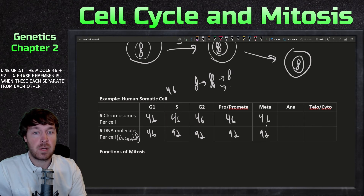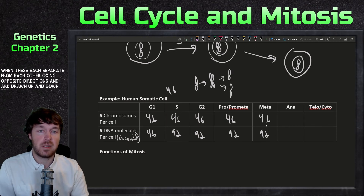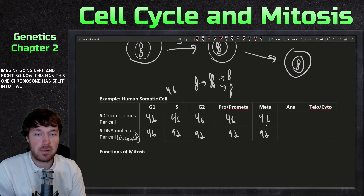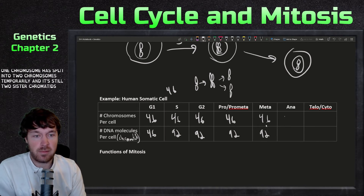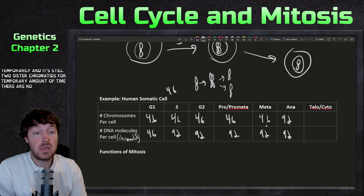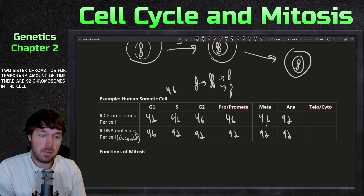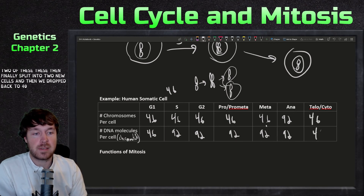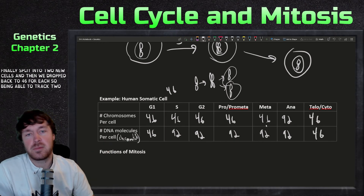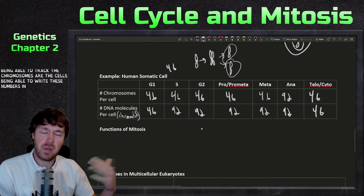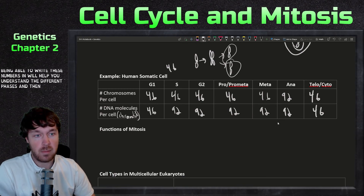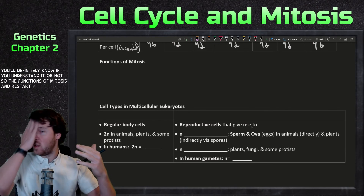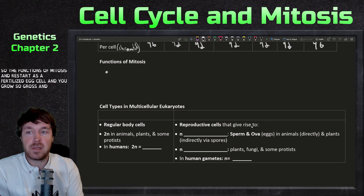In anaphase, each sister chromatid separates and moves to opposite poles — so temporarily, there are 92 chromosomes in the cell and still 92 DNA molecules. Once cytokinesis splits the cell, each daughter cell drops back to 46. Being able to track these numbers helps understand the different phases, and adding meiosis next will test that understanding. The functions of mitosis include growth and development, starting from one fertilized cell.